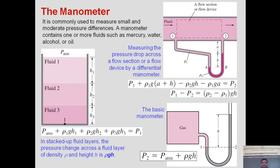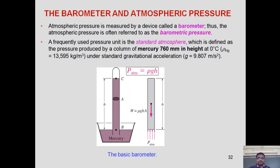So like that we can measure pressure easily with the help of these kinds of manometers. We have the simple manometer, which gives pressure at a single point, and the differential manometer, which gives the pressure difference between two different locations.